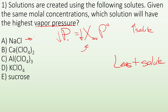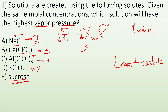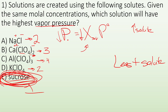NaCl is going to break up into two particles: Na+ and Cl−. CaCl(ClO4)2 is going to break up into three particles — we get Ca2+ and two ClO4− ions. Al(ClO4)3 is going to give us four particles. KClO4 is going to give us two particles. And sucrose is a non-electrolyte — we're only going to get one particle. So the one with the highest vapor pressure is going to be sucrose, because it gives the least number of particles in solution.